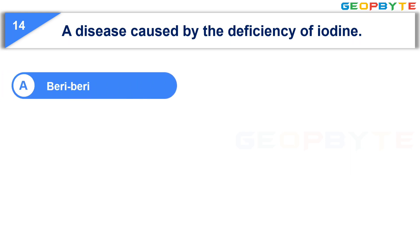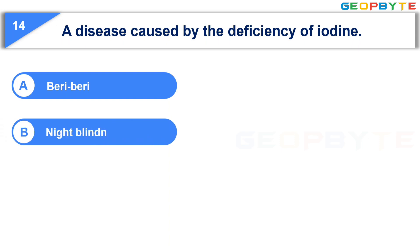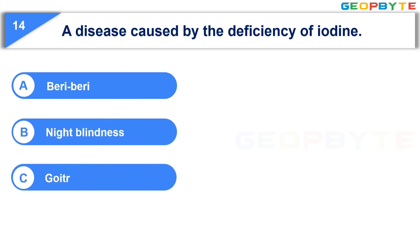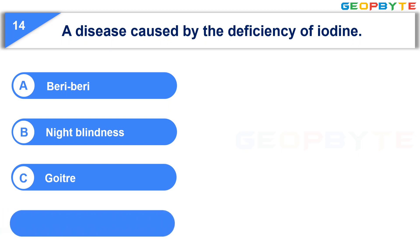Option A: beriberi. Option B: night blindness. Option C: goiter. Option D: none of the above. Your time starts now.